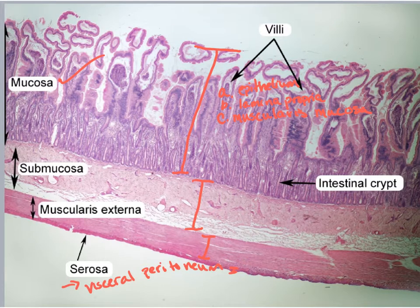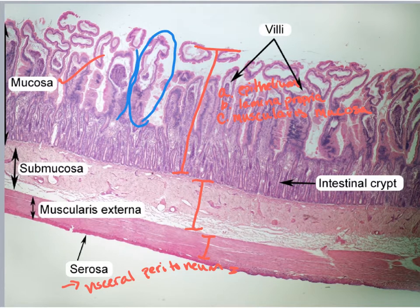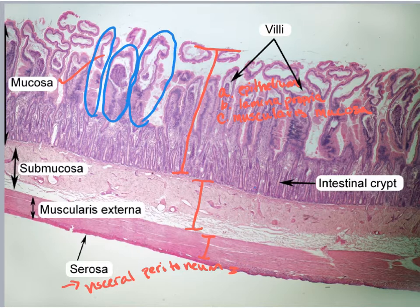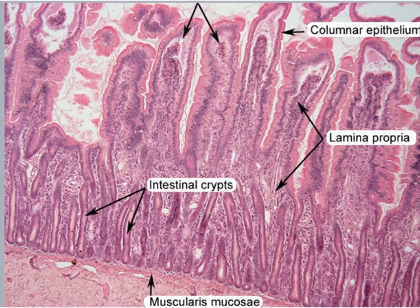We learned in the second lecture about the projections of the mucosa called villi, and they are pretty distinct here. Here's a nice one — here's one villus, here would be another, and another. Remember they help to increase the surface area for absorption. And then also here you can see one of those intestinal crypts.